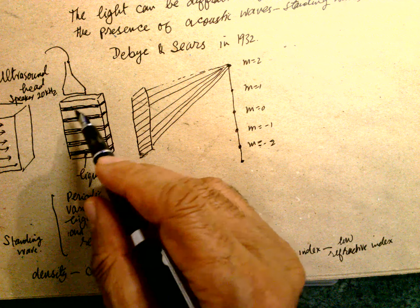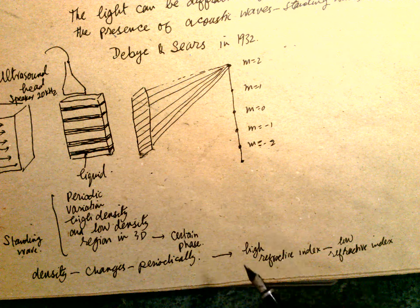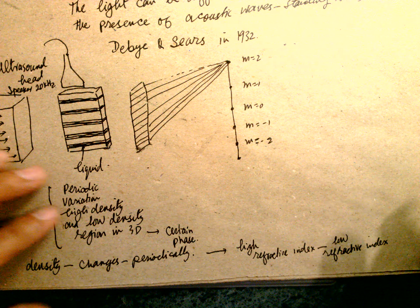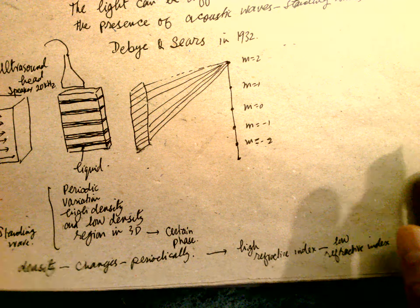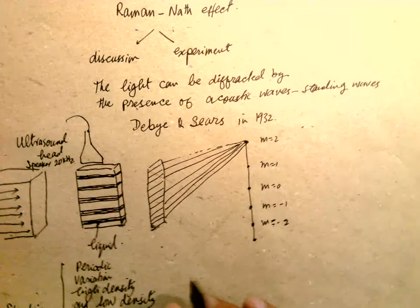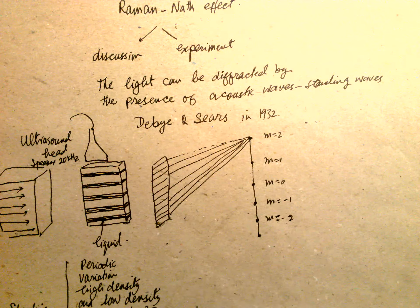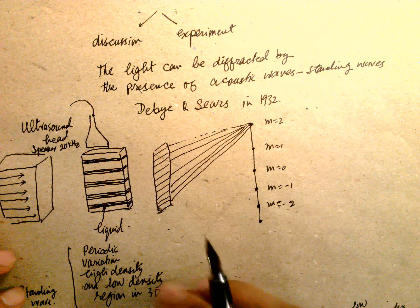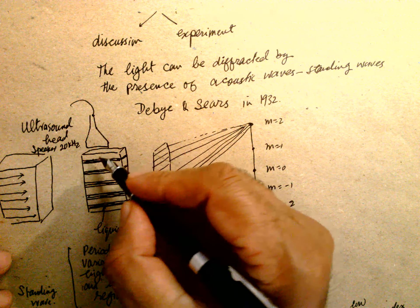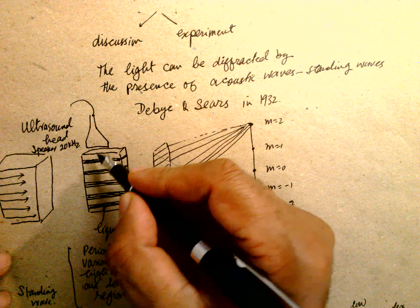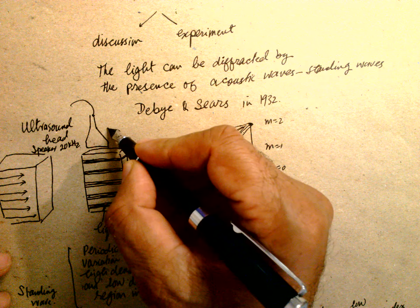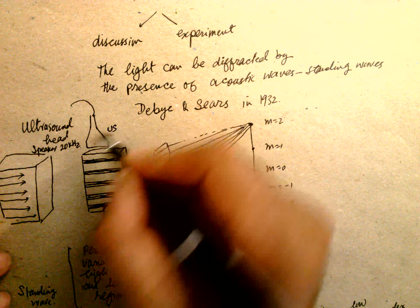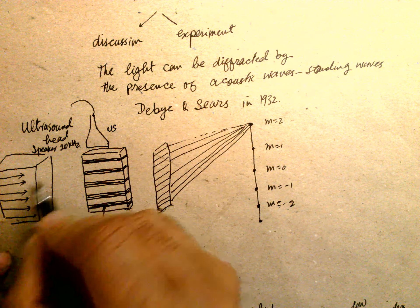The density corresponds to pressure variations. So there is a variation from high refractive index to low refractive index in the medium. One source is the ultrasound and the other is the light.